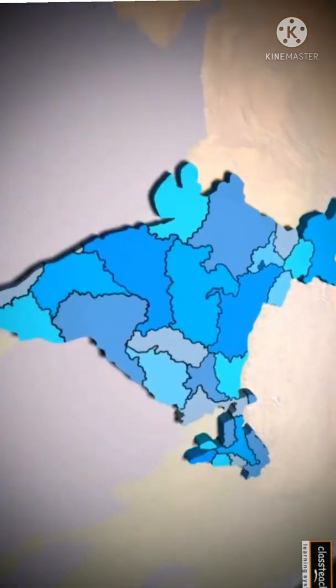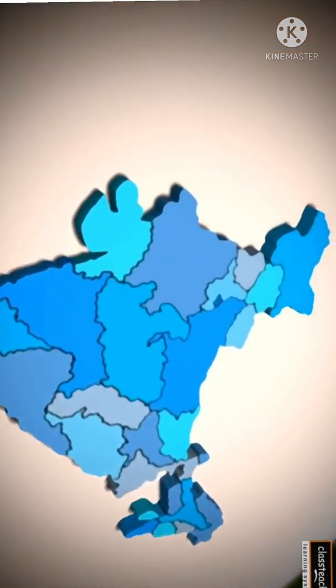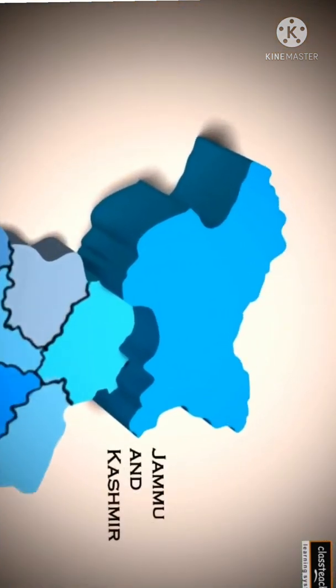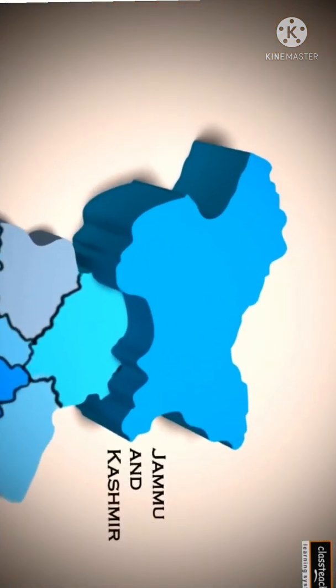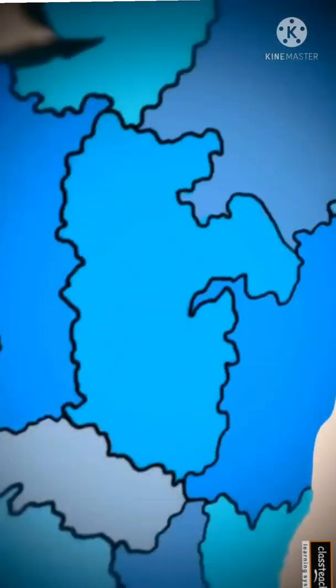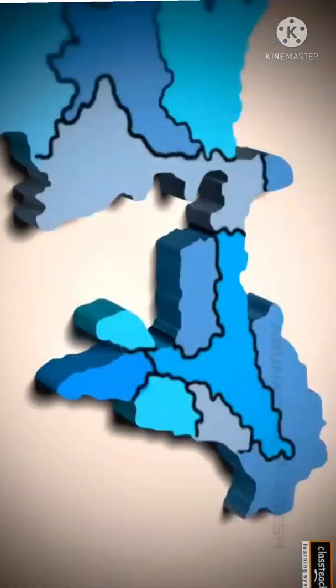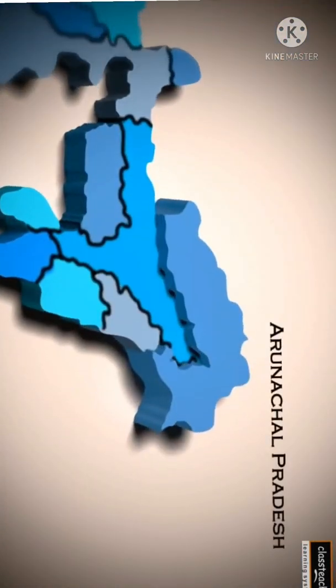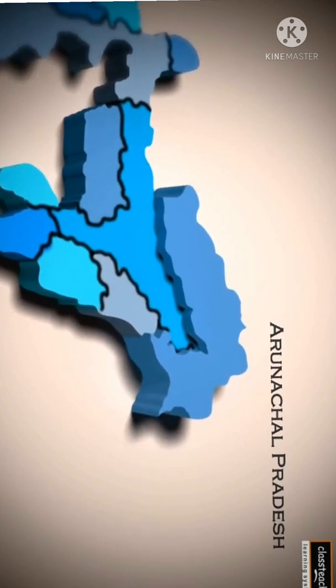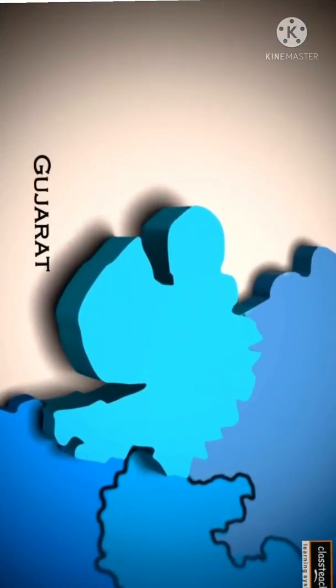The mainland of India extends from Jammu and Kashmir in the north, to Kanyakumari in the south, and Arunachal Pradesh in the east, to Gujarat in the west.